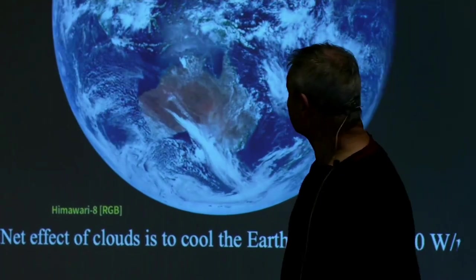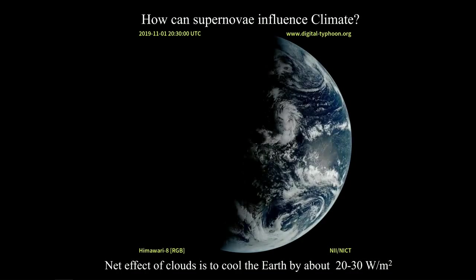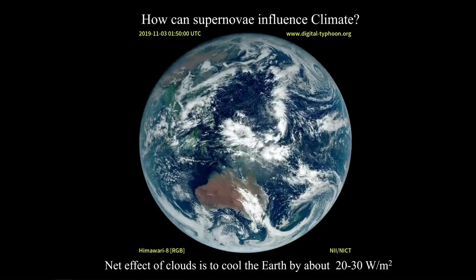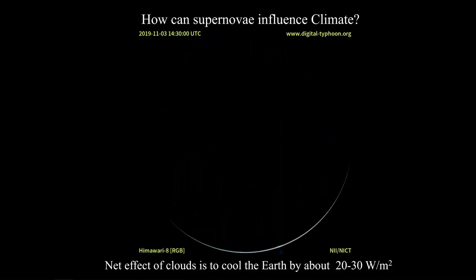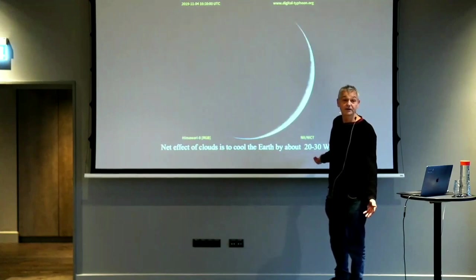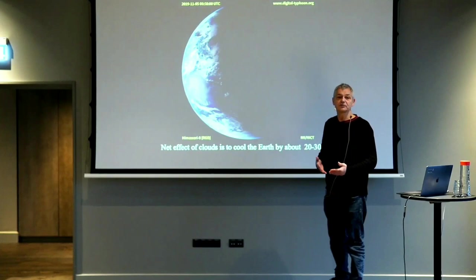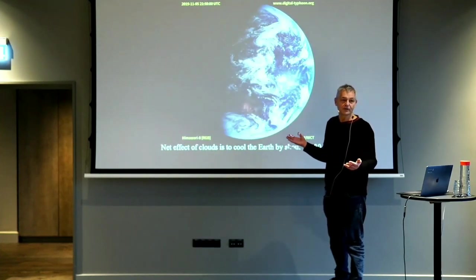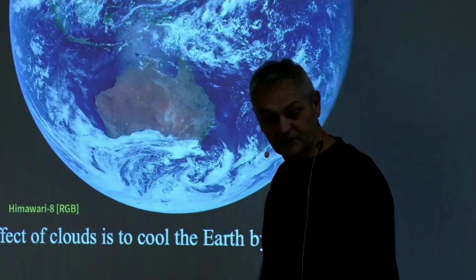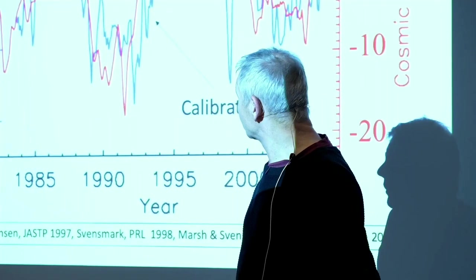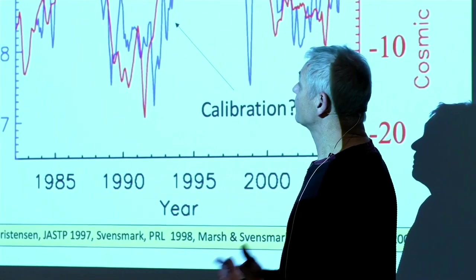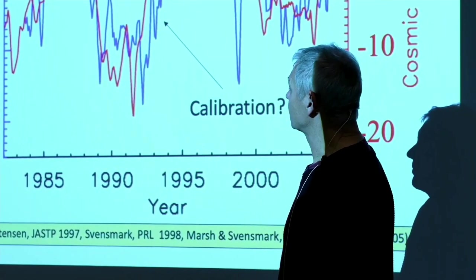So if there is such a connection, why should it exist? The idea I worked on for a long time: if you look at this satellite picture, what is very obvious is that you have clouds everywhere. Clouds are extremely important for the energy budget of the Earth — the net effect of clouds is to cool the Earth by about 20 to 30 watts per square meter. If you look at the total effect of CO₂ since 1750, it's about 2 watts per square meter. So if you have a systematic change in the Earth's cloudiness, it could affect Earth's climate.